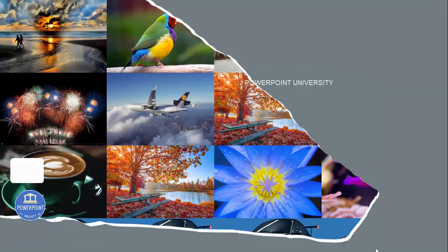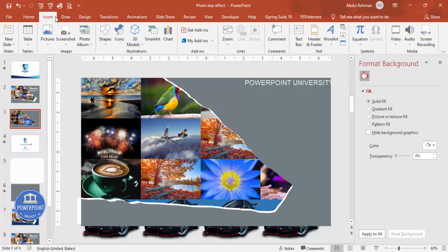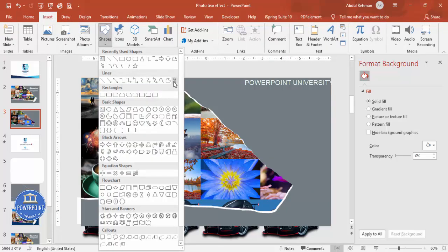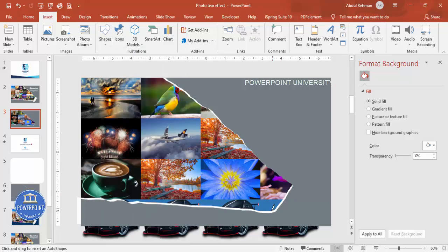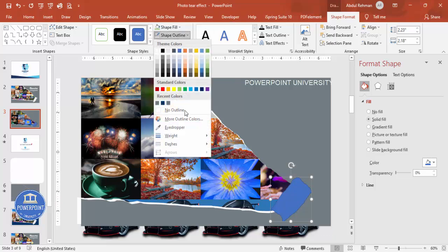Once all images are filled, you can add a paper cut-out effect again. Go to Insert > Shapes > Freeform Scribble and draw a scribble shape along the edge. Set Shape Outline to No Outline.